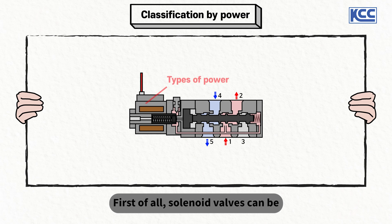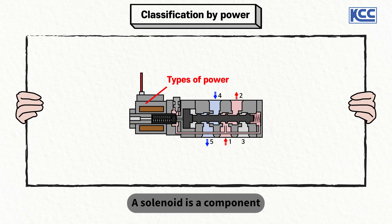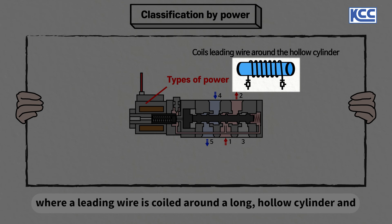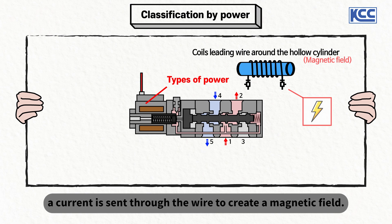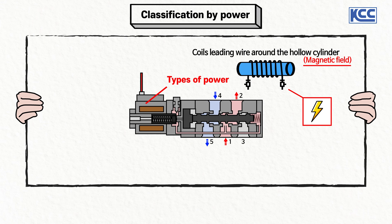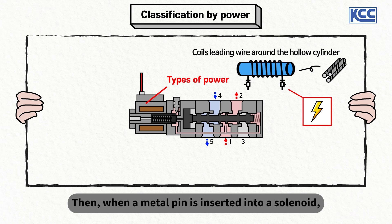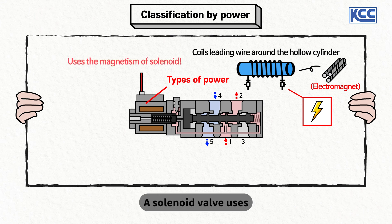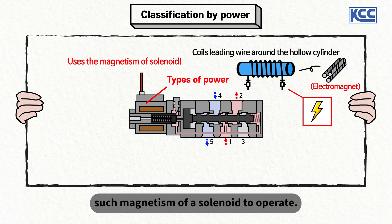First of all, solenoid valves can be categorized into types of power. A solenoid is a component where a leading wire is coiled around a long hollow cylinder and a current is sent through the wire to create a magnetic field. When a metal pin is inserted into a solenoid, this metal pin becomes an electromagnet. A solenoid valve uses such magnetism of a solenoid to operate.